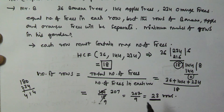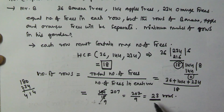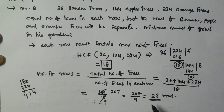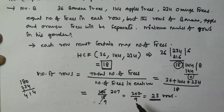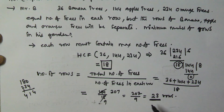So there are 23 rows, and each row contains the maximum number of trees — that is 18 — all of the same kind. So 23 is the minimum number of rows. I hope you got this one. Thank you very much for watching this video, and please subscribe to my channel.